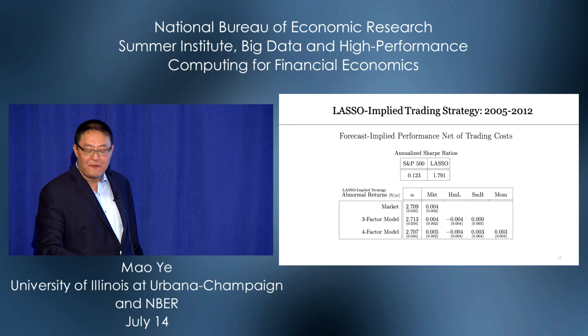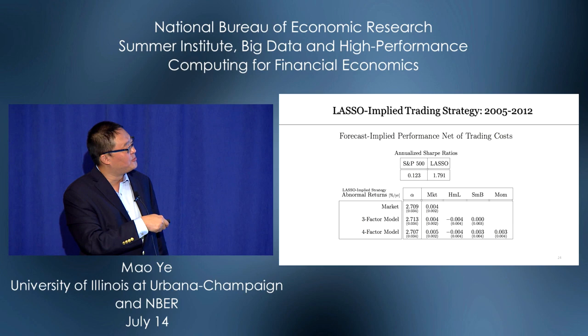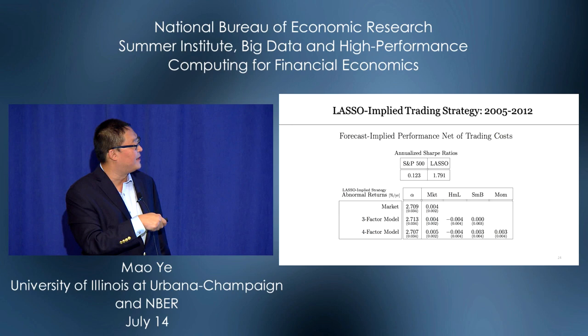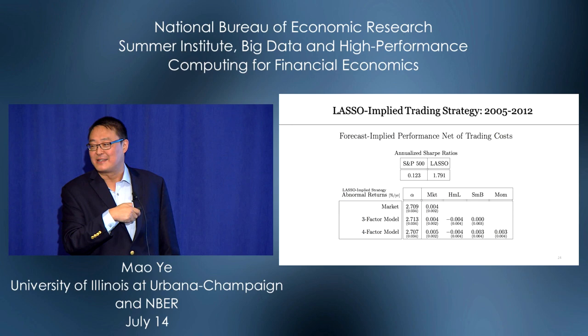What do we find? The LASSO-implied strategy works really well. During our sample period of 2005 to 2012, the Sharpe ratio of the S&P 500 is 0.123. But the Sharpe ratio of the LASSO-implied strategy is about 1.8, with an alpha of 2.8.